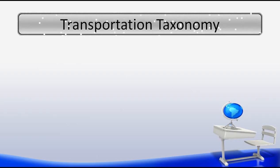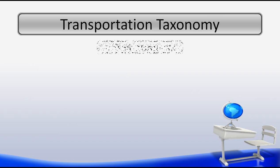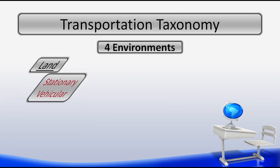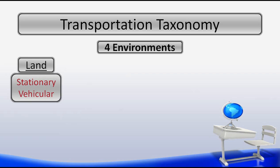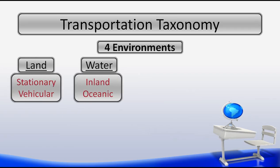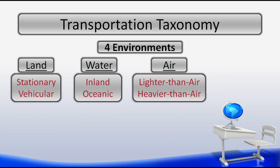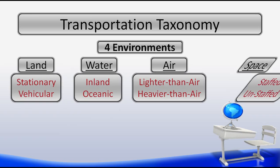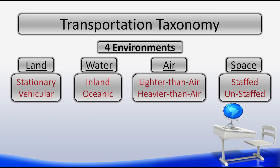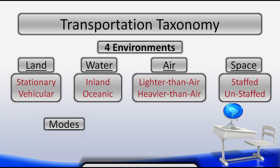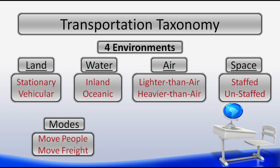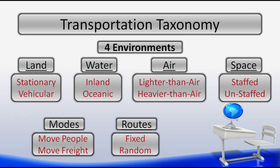We are now going to talk about the Transportation Taxonomy. The word taxonomy means to organize information based on its natural classification. In our case of transportation, we are going to organize our information based on environments, and we have four of those environments. The first environment is land, with two subsystems: stationary and vehicular. Then we have water, with subsystems inland and oceanic. Then we have air, with lighter than air and heavier than air. And finally, our fourth environment is space, with staffed and unstaffed. Also included in this taxonomy, we have two modes — to move people and to move freight — and two routes, which can either be fixed or random.